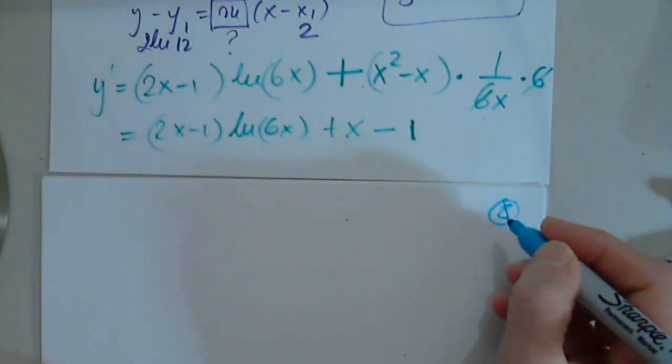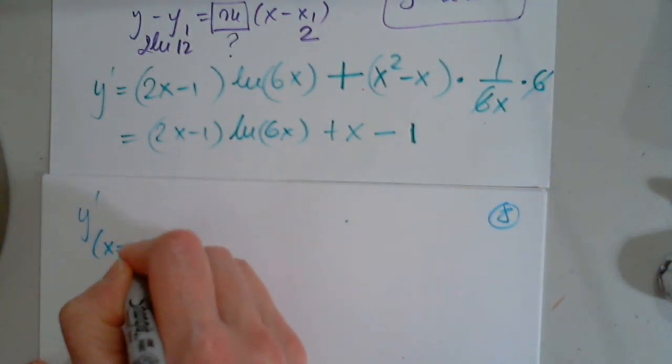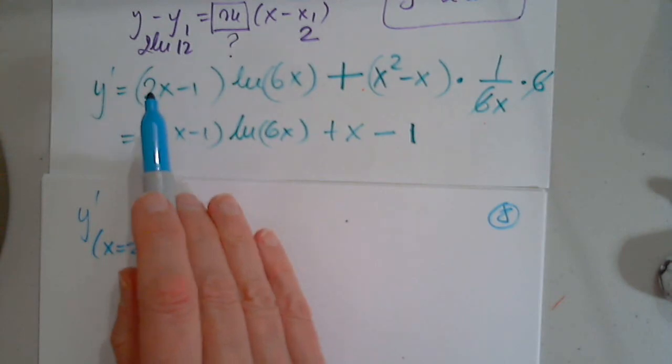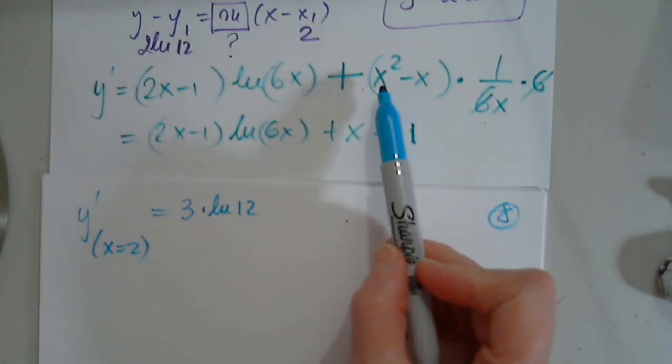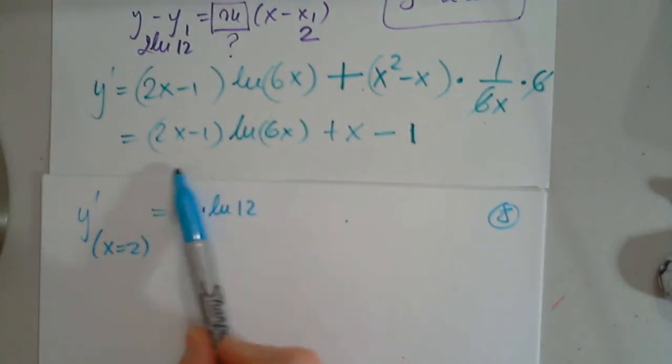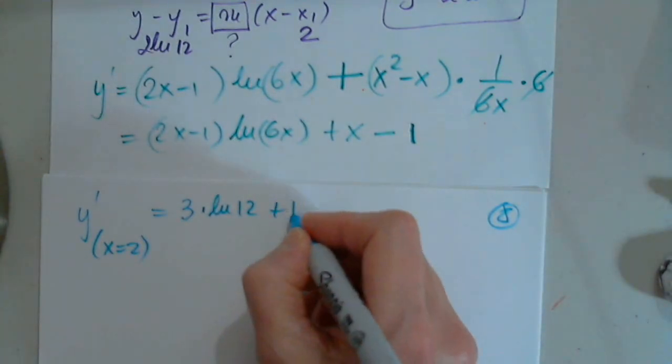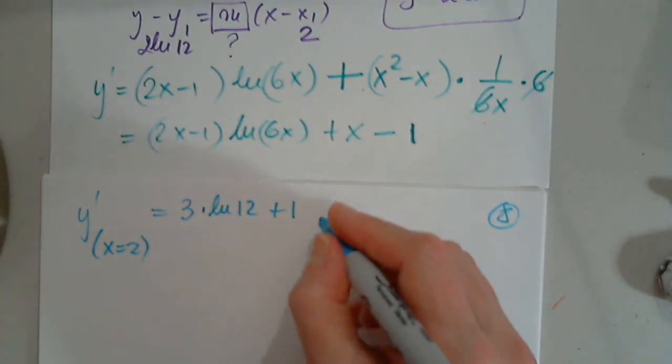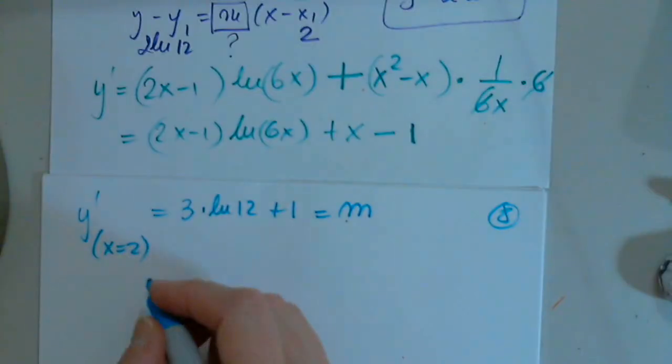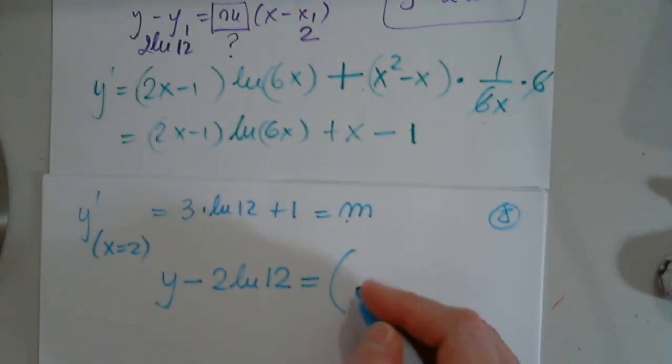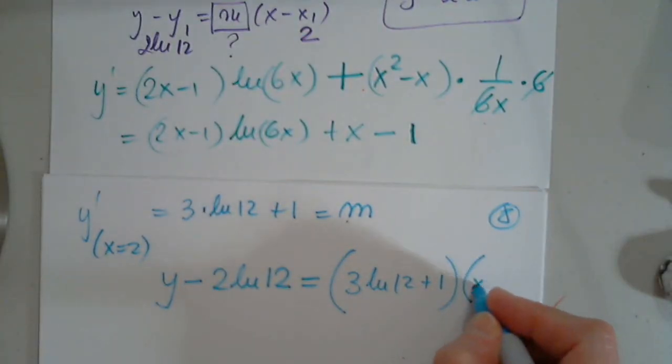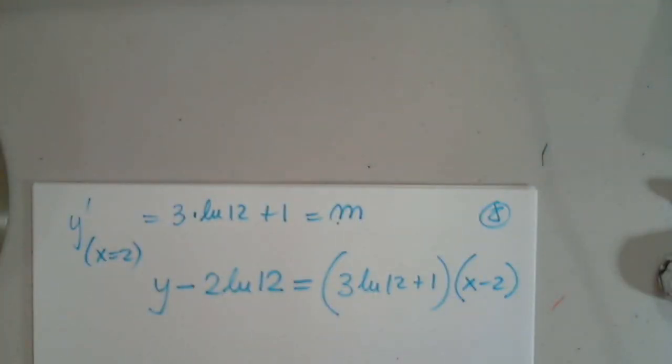So now I'm on page 8. So y prime when x is 2. 2 times 2 is 4. 4 minus 1 is 3. Natural log 12. 4 minus... Oh. I'm here. So 4 minus... Yes. Yes. And then plus 2 minus 1 plus 1. So this is the slope. So now, y minus 2 natural log 12 equals this. 3 natural log 12 plus 1, x minus 2 in parentheses. Very ugly but it is what it is.